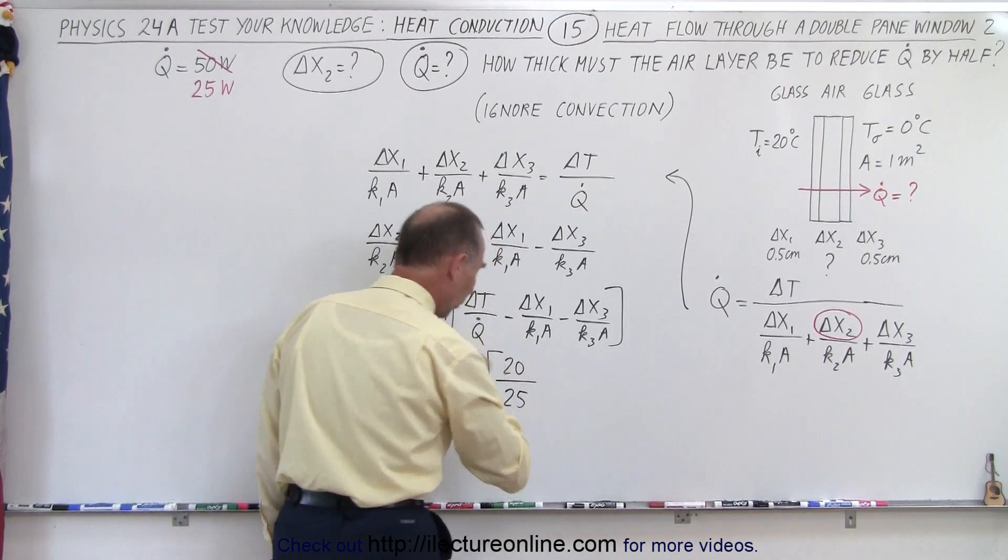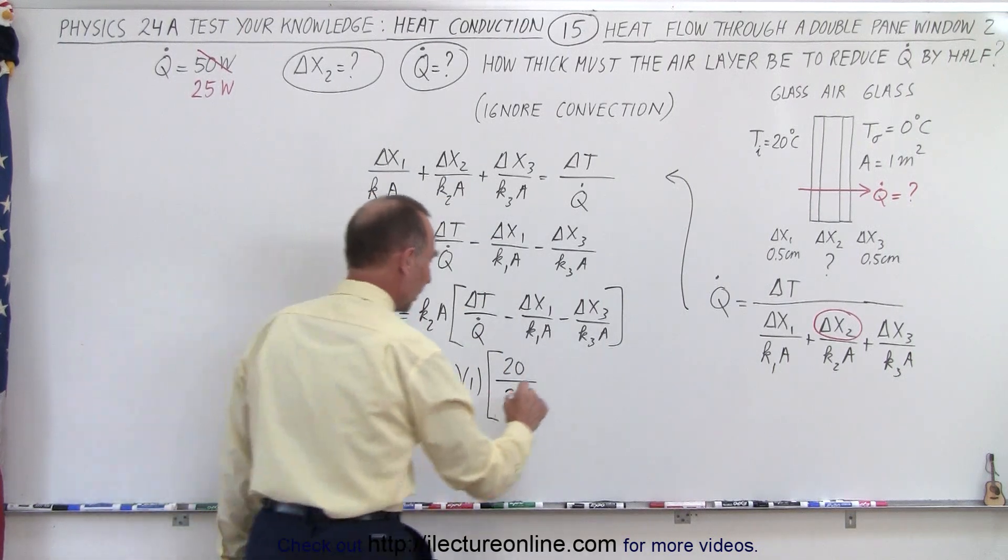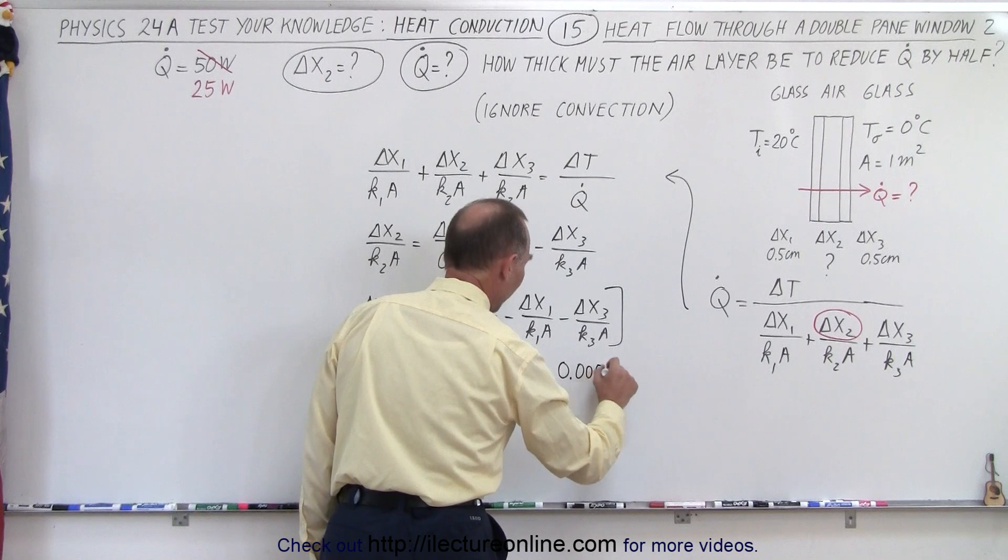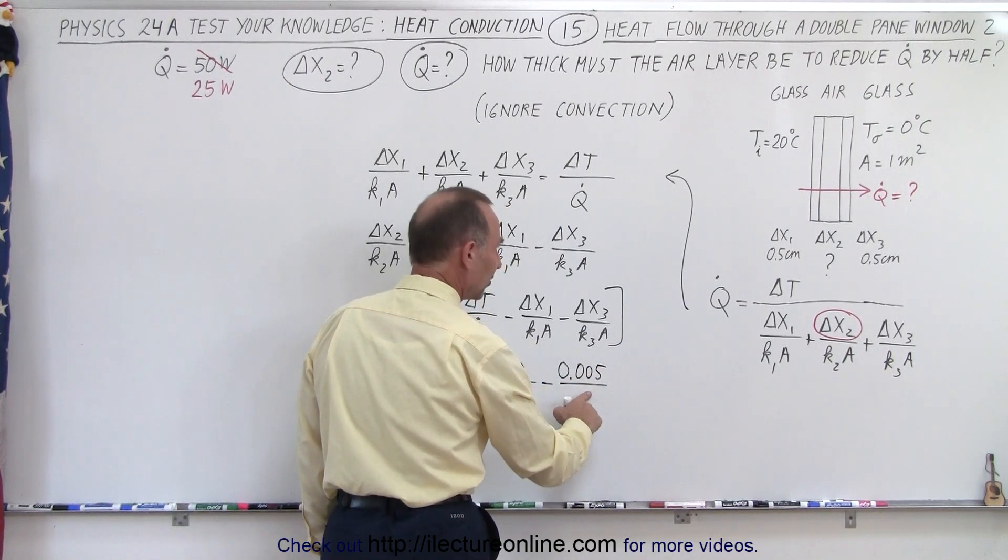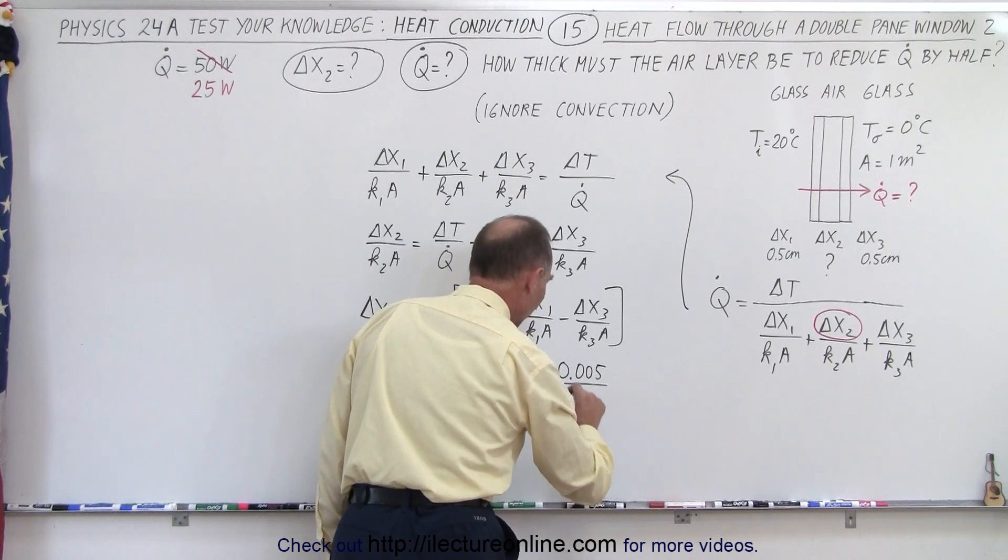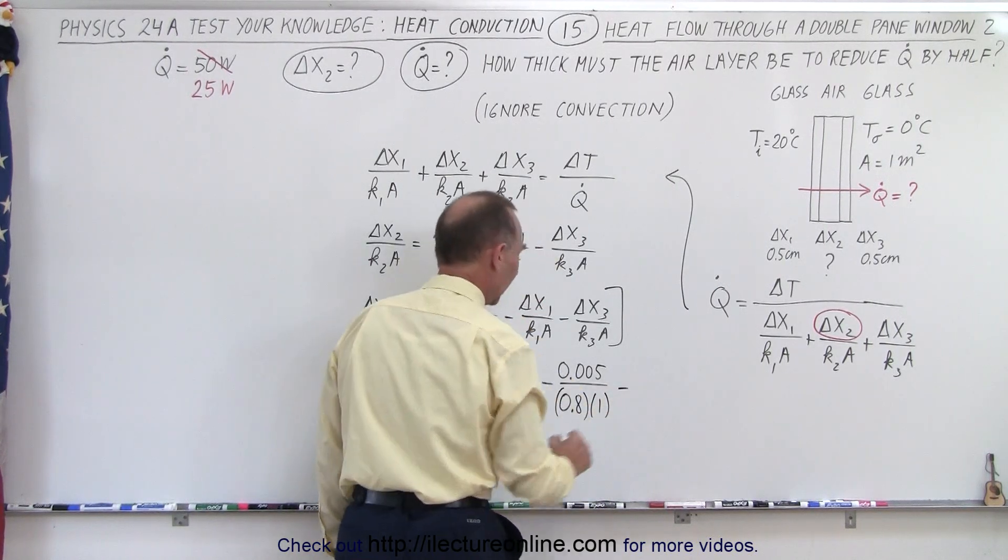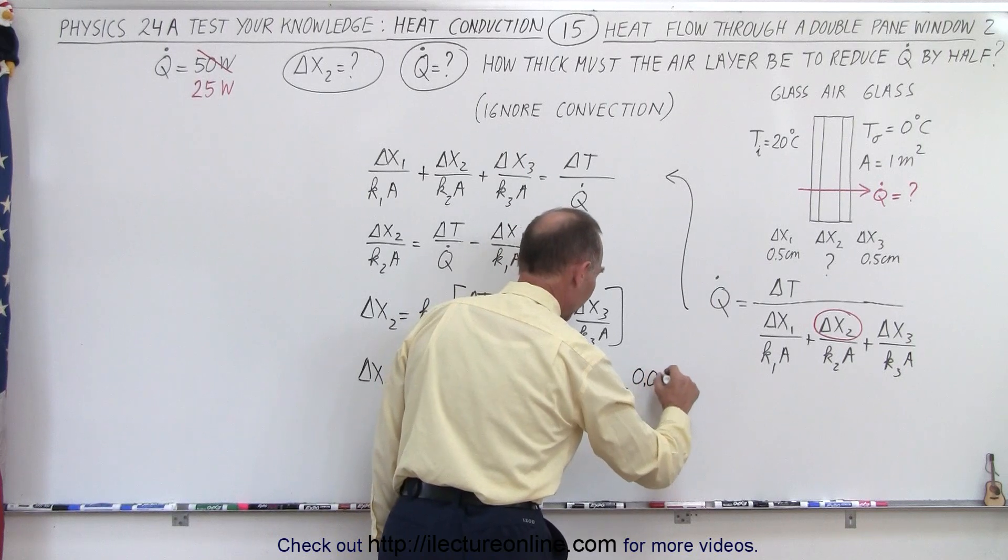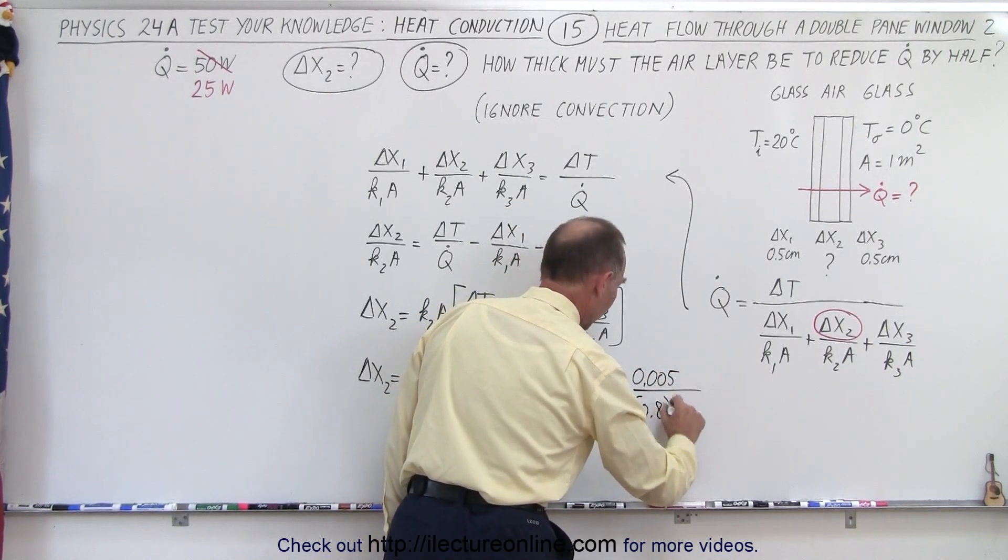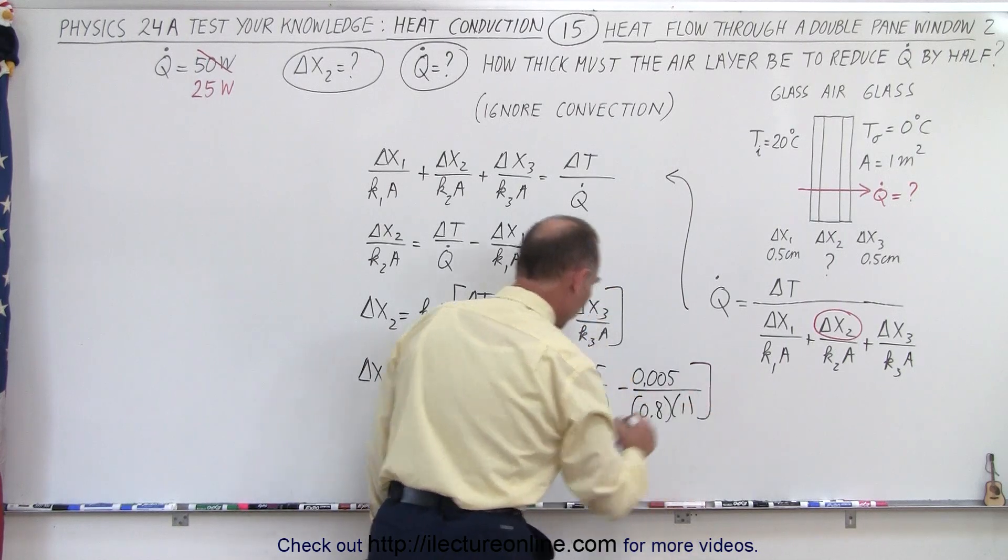We're now changing that to 25 watts instead of 50 minus delta x1 which is 0.005. That's half a centimeter converted to meters. k is going to be 0.8 and the cross sectional area is 1. And again we have another pane on the other side, 0.8 times 1.